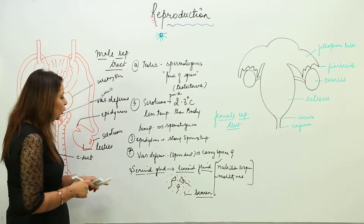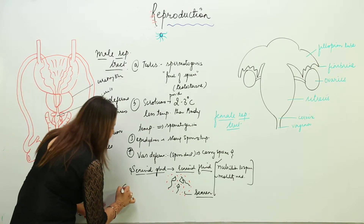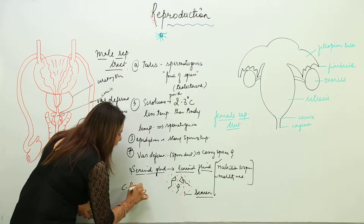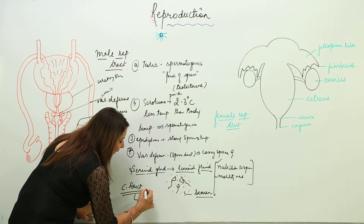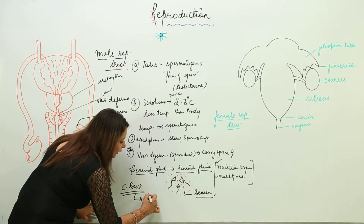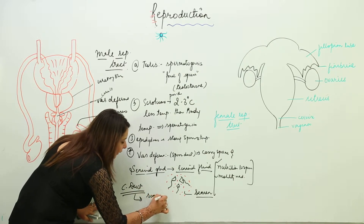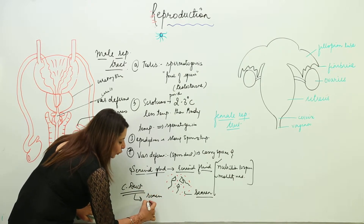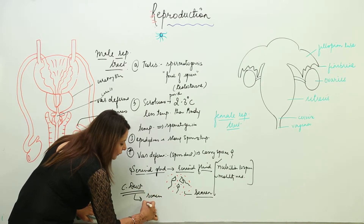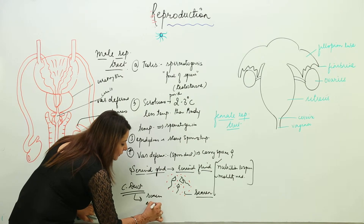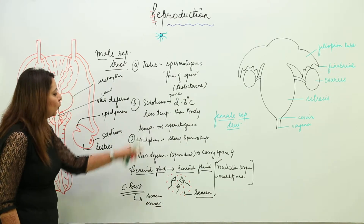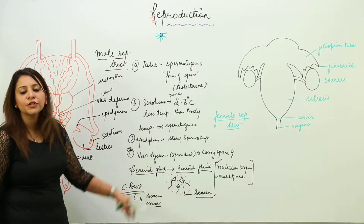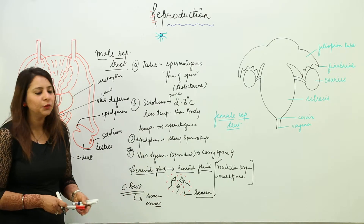The vas deferens combines with the urethra to form a common duct. In males, this common duct is meant for both the secretion of semen and for excretion — that is micturition, the passing of urine.